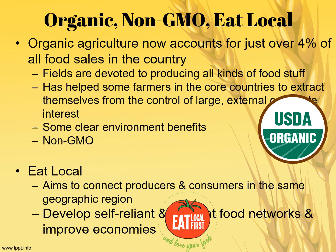In response to highly processed, genetically modified foods prevalent in developed countries, we've seen an opposite movement: the organic, non-GMO, eat-local movement. Organic agriculture now accounts for just over four percent of all food sales in the U.S. It has helped some farmers in core countries extract themselves from the control of large corporate interests, and there are clear environmental benefits. However, you cannot grow as much food — it is not as intensive as non-organic production. The eat-local movement aims to connect producers and consumers in the same geographic region to develop self-reliant food networks and improve local economies.